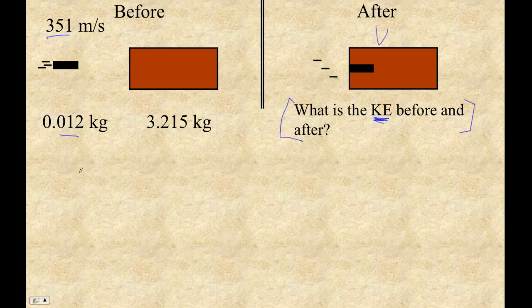I need to figure out what this velocity is first. So I'm going to go 0.012 times 351 plus 0 because this guy is not moving. And then this is going to be 3.215 plus 0.012 times v. So 3.215 plus 0.012 is 3.227. And then 0.012 times 351 is 4.212 kilogram meters per second.